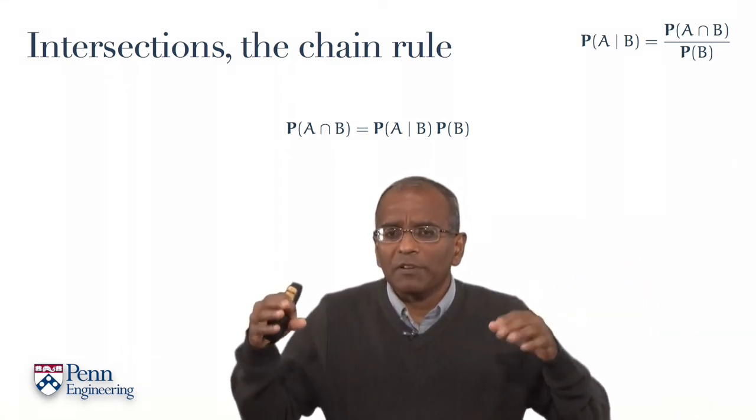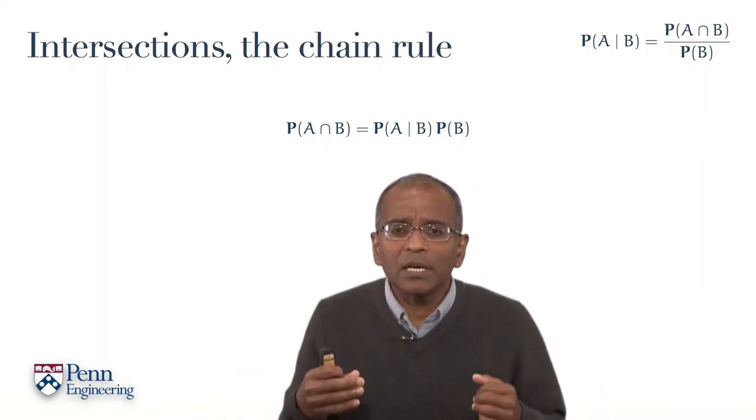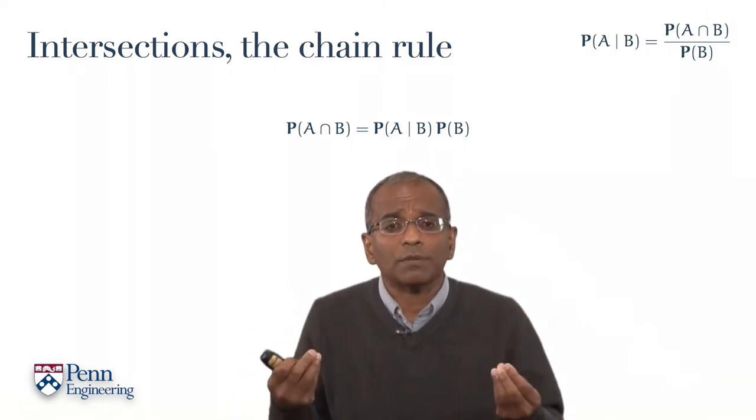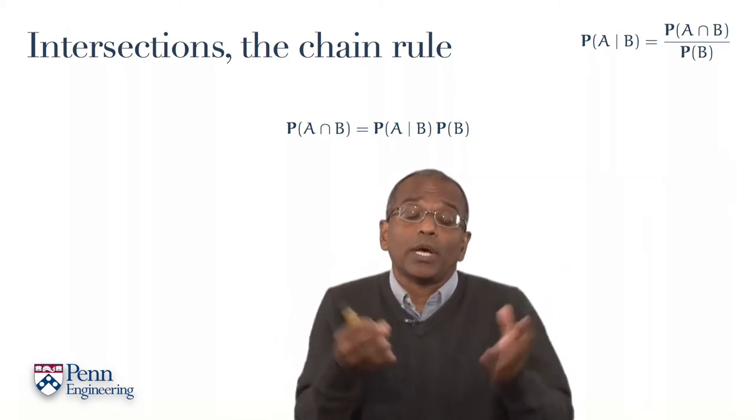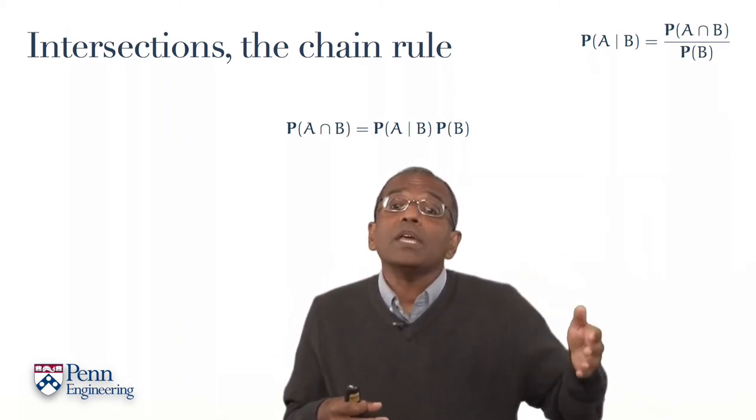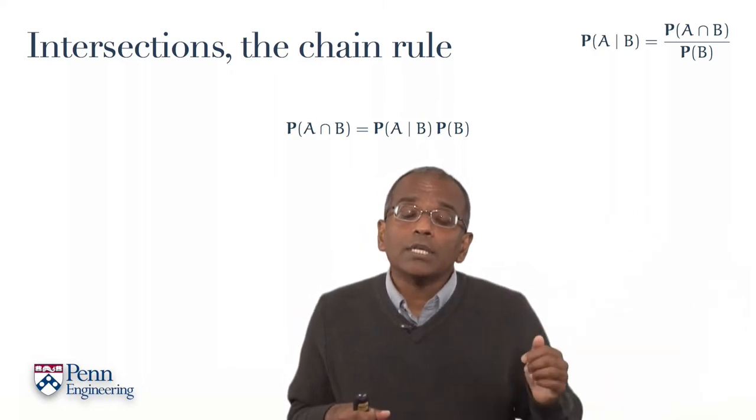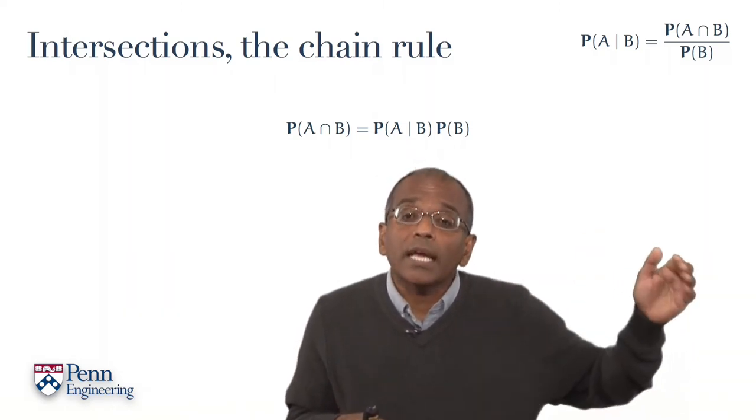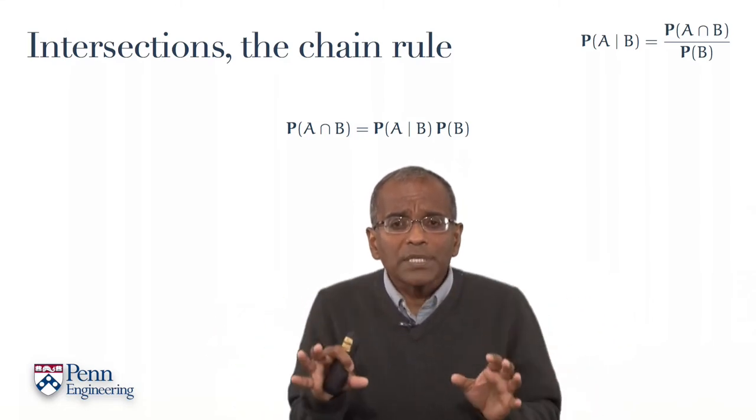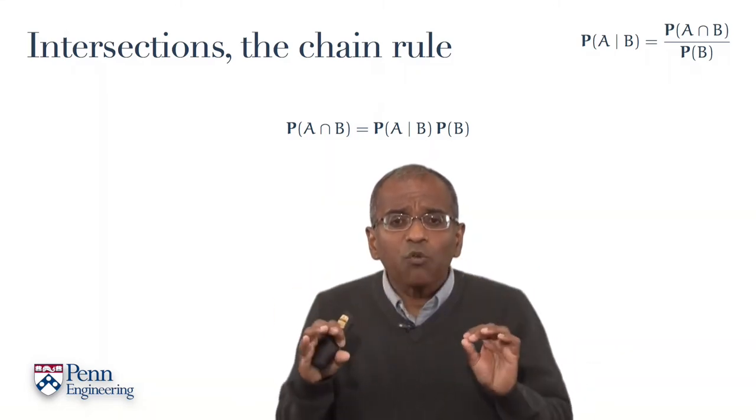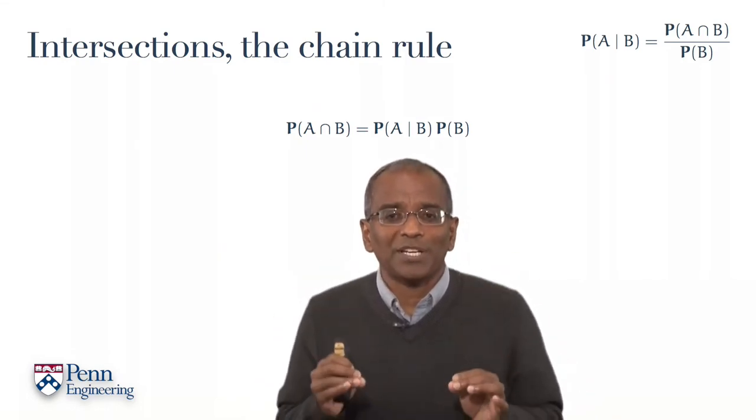Of course, we could equally well have reversed the roles of A and B here because intersections are commutative. You could do them in any order. So we could have written the right-hand side just as well as the probability of B given that A occurred times the probability that A occurred. But no matter. For our purposes, what you've now got is an expression for an intersection probability.